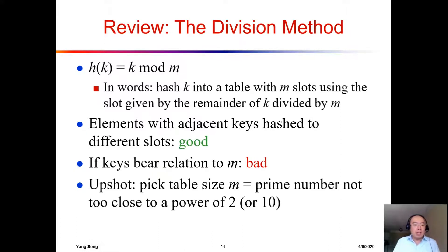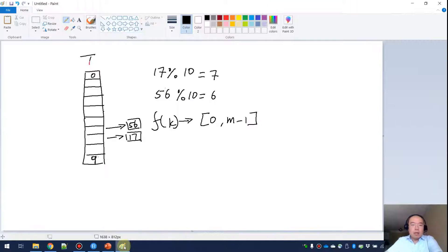But if the keys bear relation to M, then that is bad. What do I mean here? If we send 60, so 60 mod 10 will give me a 0. And then we send 70, and 70 will give you a 0 again. And 80, another 0, and then 90, another 0. So now we have a problem because all the values are going to slot 0. We are going to have a lot of collisions. In this case, it's not a good idea to use that one.